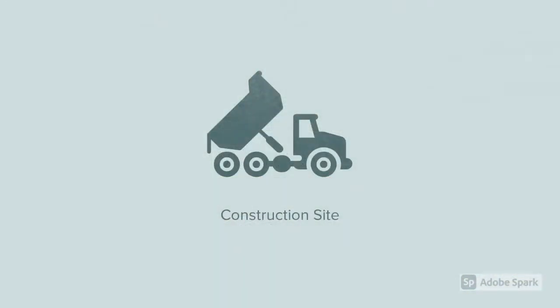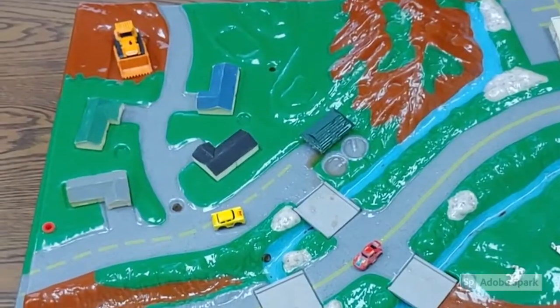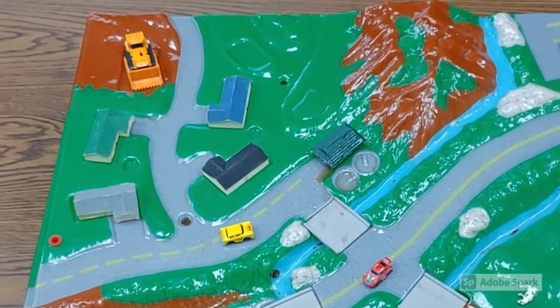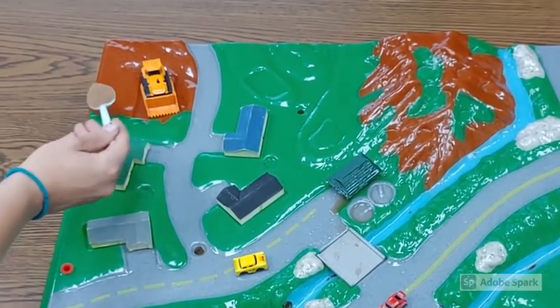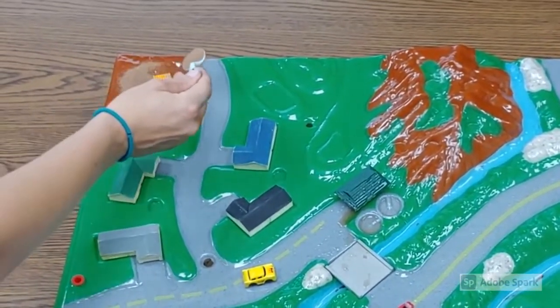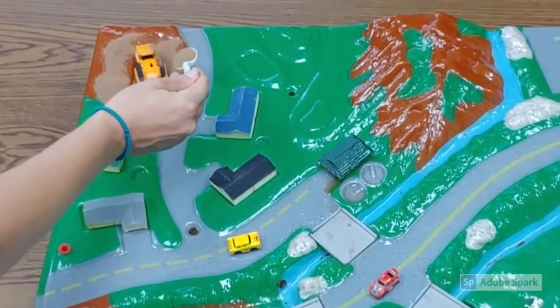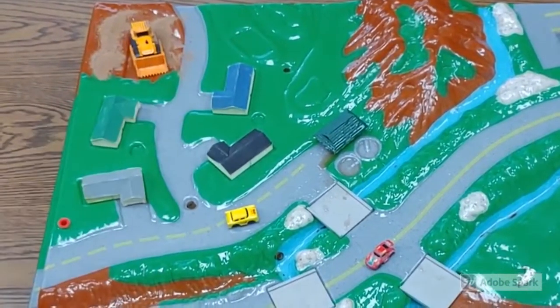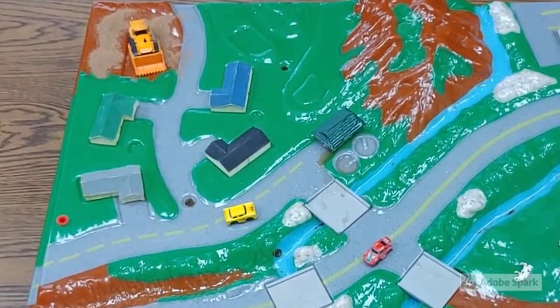First, let's start with construction sites. Without plants to keep soil in place or silt fencing to keep everything on site, soil can run off into lakes and rivers.